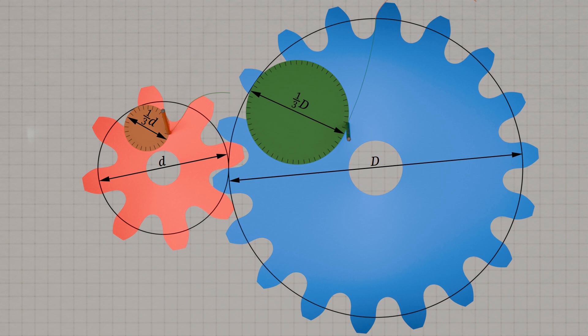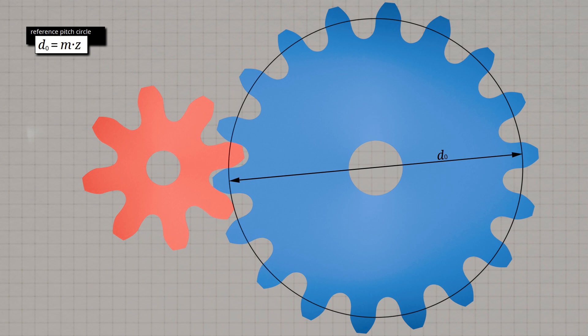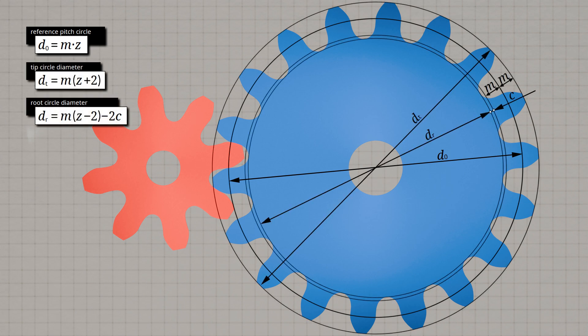A ratio of about 1 to 3 is often found, where this ratio refers to the inner rolling circle for the construction of the hypocycloid. In cycloidal gears, the base circle always corresponds to the pitch circle. The contact point of the pitch circles is the pitch point. As with involute gears, the pitch circle diameter D0 is calculated from the product of the module M and the number of teeth Z. The tip and root diameters of a cycloidal gear can also be determined in the same way as for an involute gear.